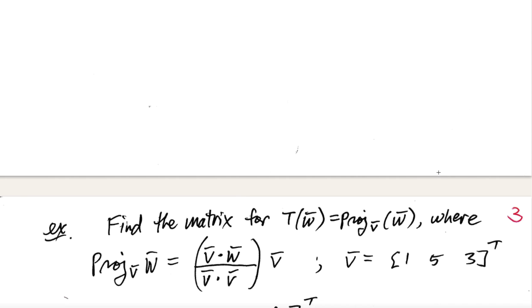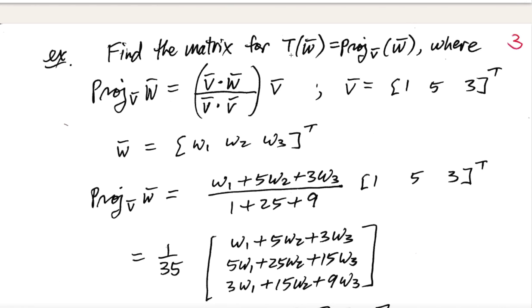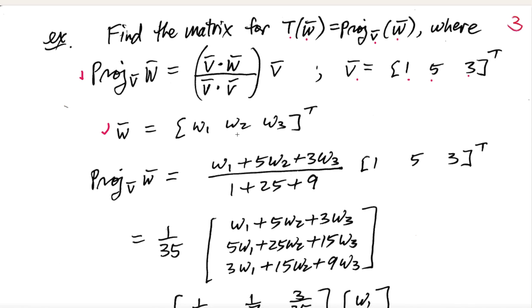Now, let's do another quick question here. Find the matrix for the following linear transformation here. We'll see that it's linear here. T of W bar is the projection of W bar onto V bar, where you have the following parameters. V bar is actually the transpose of (1, 5, 3), reading across there. So that's that column vector. You know what the projection is, right? The projection onto V would be what? V dotted with W over V dotted with V times V. Now, in general, I'm going to say W is (W1, W2, W3) transpose there. So it's going to be a column vector.